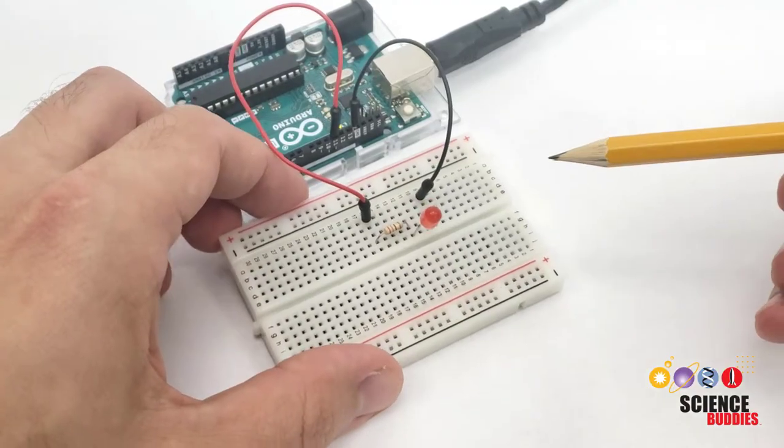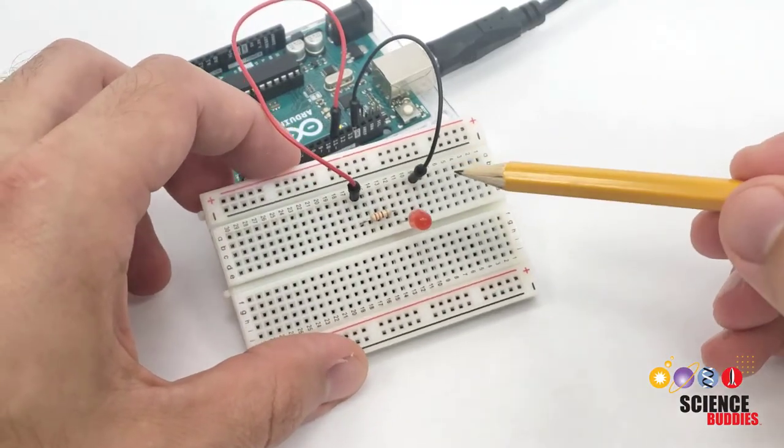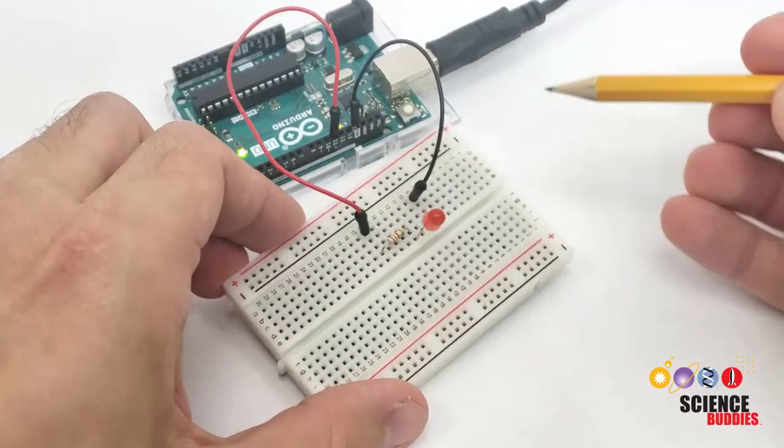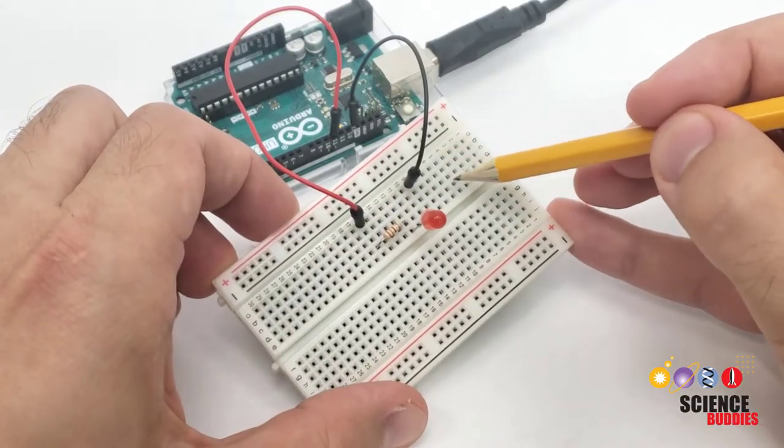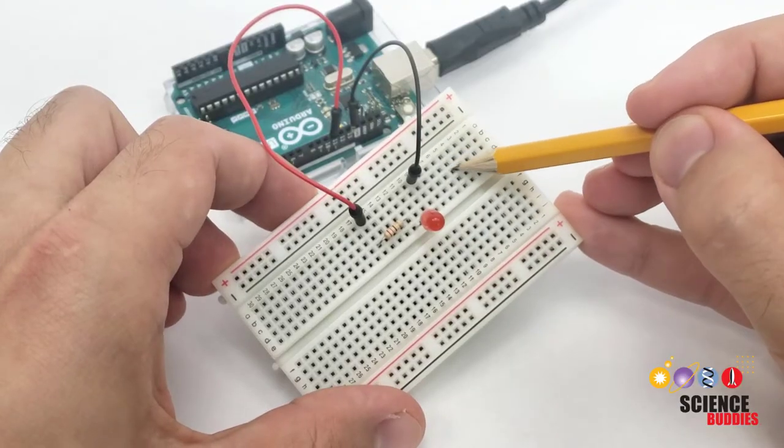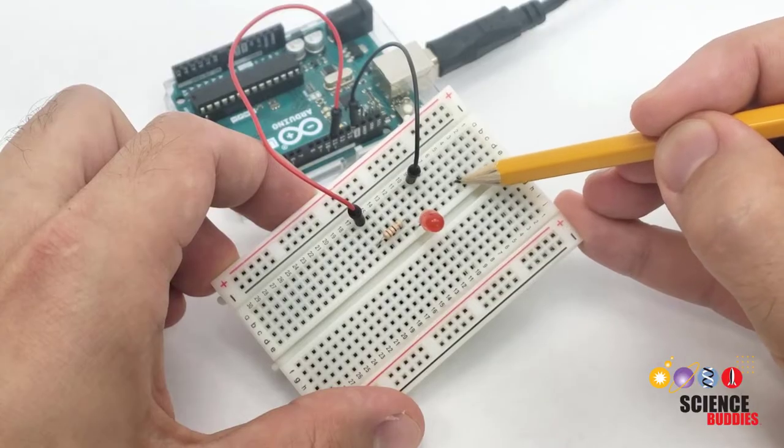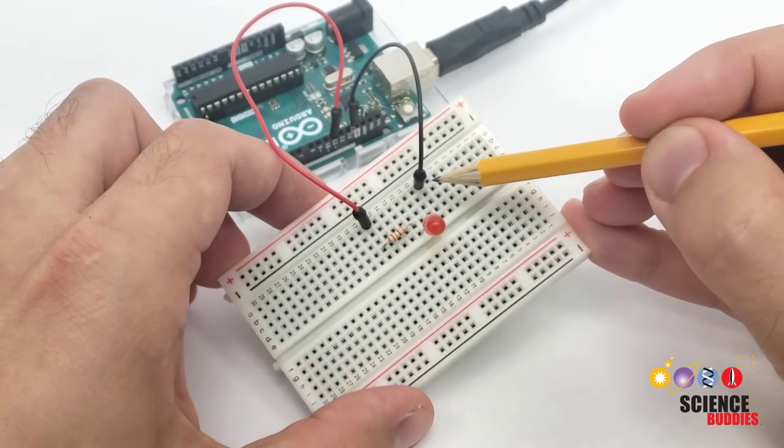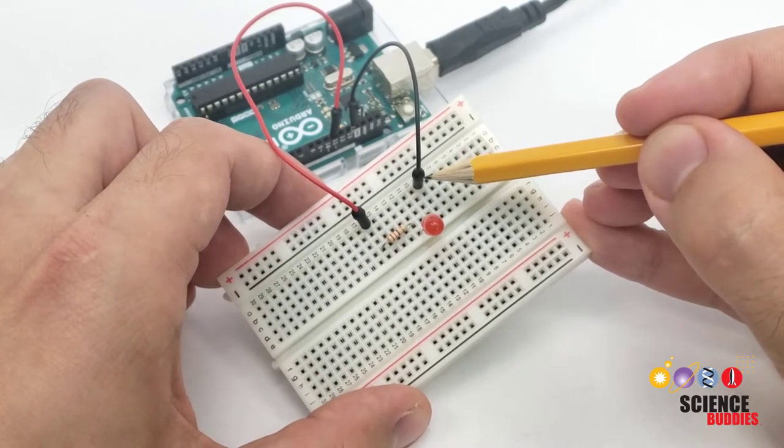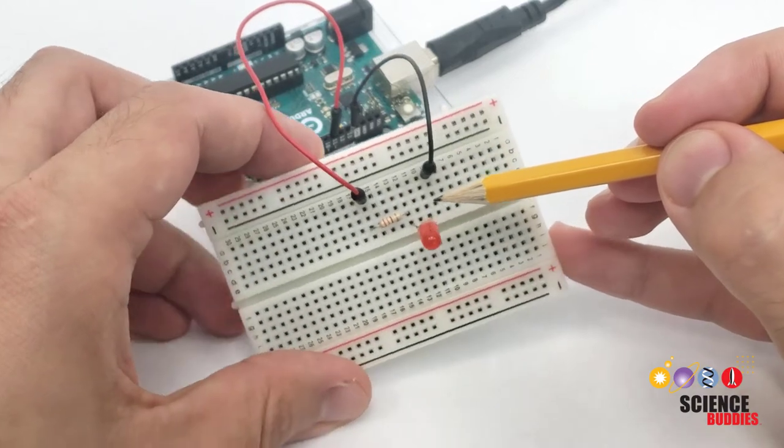Next, check for open circuits on your breadboard. Remember how breadboard holes are connected. Sets of five holes in each row are electrically connected to each other, but adjacent rows are not connected. So in order for two parts in the circuit to be connected to each other, they need to be inserted in the same row.